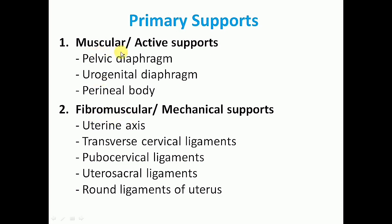The main supports are muscular or active supports which include the pelvic diaphragm, urogenital diaphragm and the perineal body. The fibromuscular or mechanical supports include the uterine axis, that is the position of the uterus, transverse cervical ligaments, pubocervical ligaments, utero-sacral ligaments and the round ligaments of uterus.